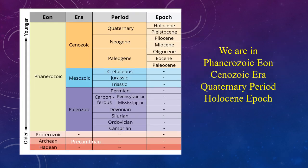So this is the geological time scale chart. We already discussed this chart in our previous video. If you didn't watch that video, the link is here — please go through that video. In this video I am not going to discuss this chart. We are living in Phanerozoic Eon, Cenozoic Era, Quaternary Period and Holocene Epoch. Let's see what are the major events in this geological time.